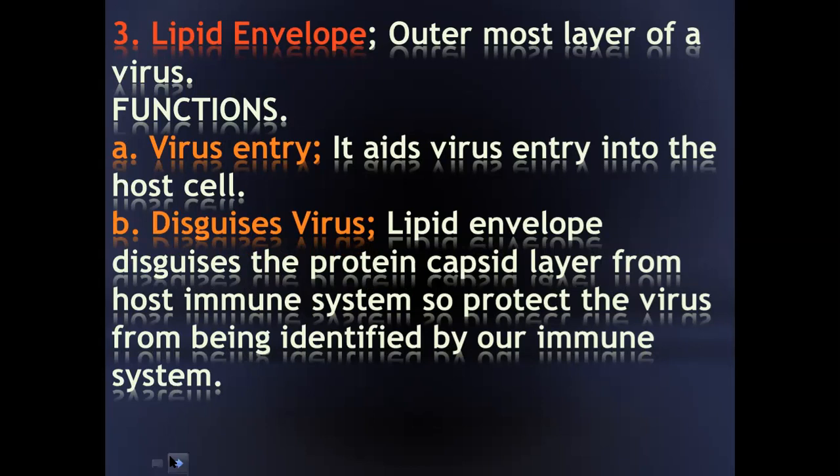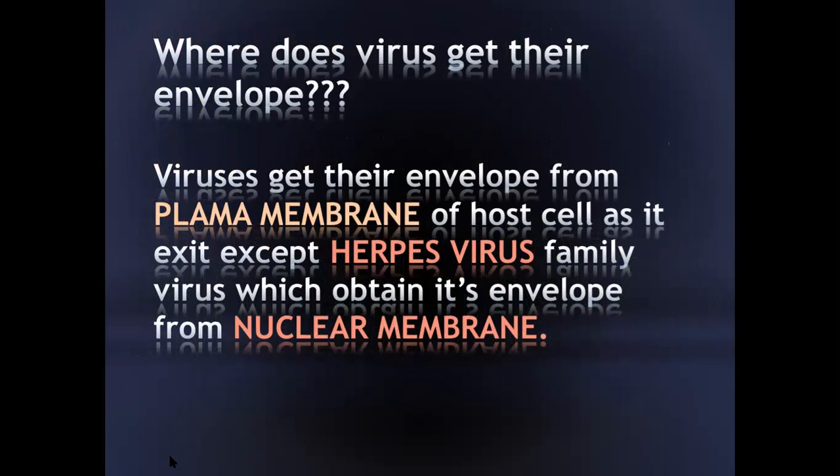The question is: where does this lipid envelope come from? Viruses get their envelope from the plasma membrane of the host cells while they are exiting from the cell after causing infection. There is an exception in the herpes virus family, which obtains its envelope from the nuclear membrane of the host.